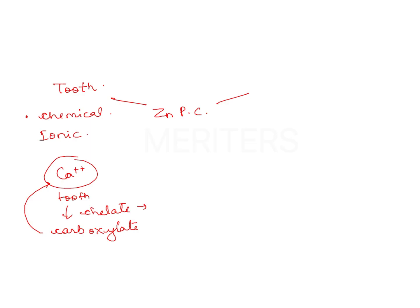It forms a ring-like complex compound and a good ionic bond. The bond strength of enamel to polycarboxylate is roughly 3.4 to 13 megapascals, and to dentine is nearly 2.1 megapascals. This is a very good bond strength for a cement.